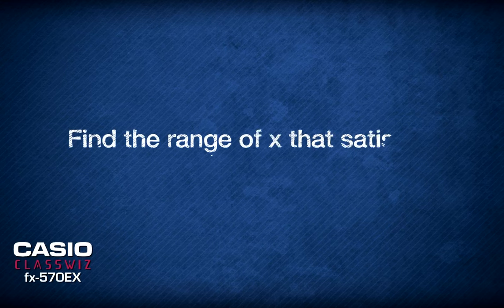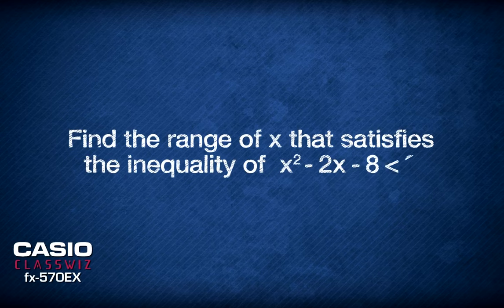So the question goes: find the range of x that satisfies the inequality x squared minus 2x minus 8 is less than 0.